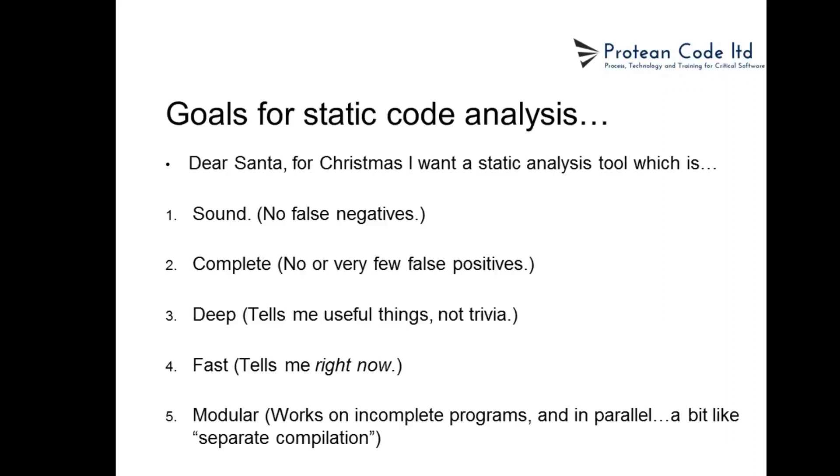So the goals for an analysis facility, I suppose, what would I like? So, dear Santa, yes, for Christmas, I want a static analysis tool which has the following five properties. This is what we vaguely in the business, or at least here we call the big five goals. So I want a tool which is said to be sound. This is a mathematician's way of saying that a tool that reports zero false negatives. So a false negative is where you say to the tool, does my program have a bug? The tool says no, which is negative, but it's lying to you. There is a bug, but it's failed to find it or it's just lied to you. So false negatives are bad because you think everything's fine and it ain't fine. You've got bugs. So a sound tool has zero false negatives. That's very, very important.